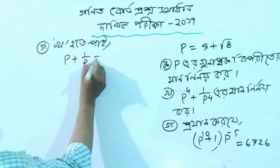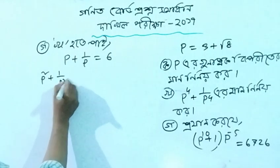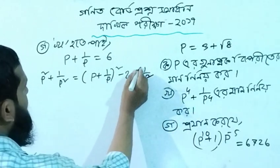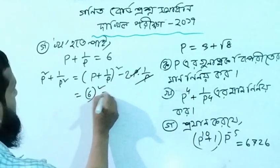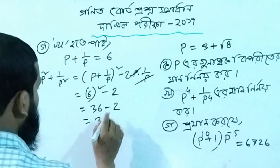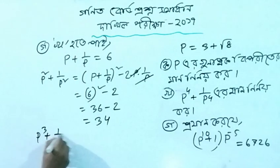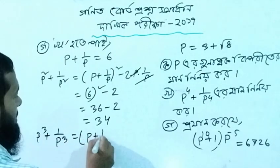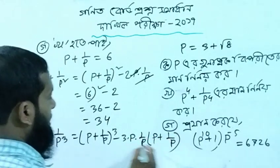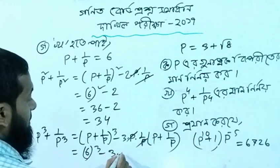p plus 1 by p equals 6. For p squared plus 1 by p squared, using (A plus B) whole square minus 2AB: 6 squared minus 2 equals 34. Now for p cubed plus 1 by p cubed, using (A plus B) whole cube minus 3AB into (A plus B): p plus 1 by p equals 6, and 3 times again total equals 6.